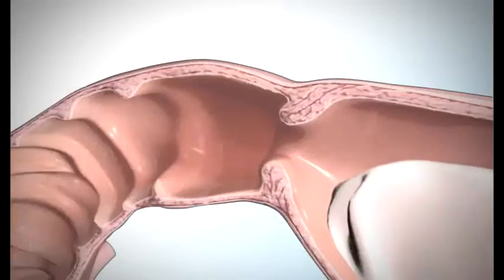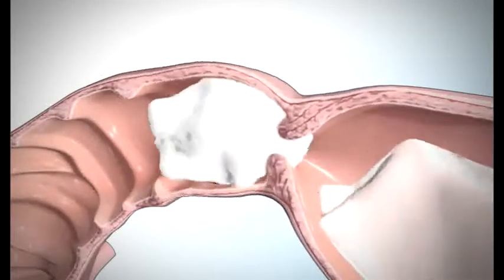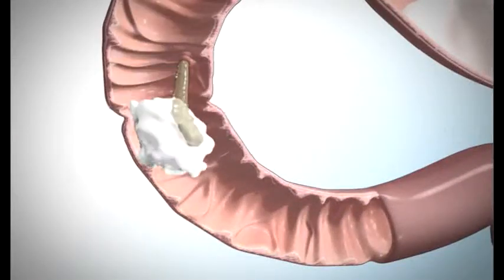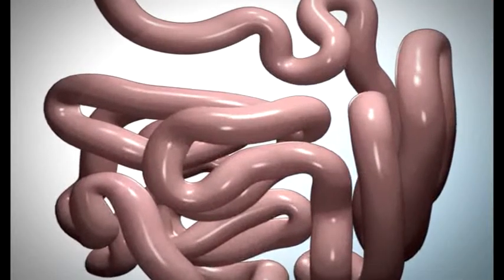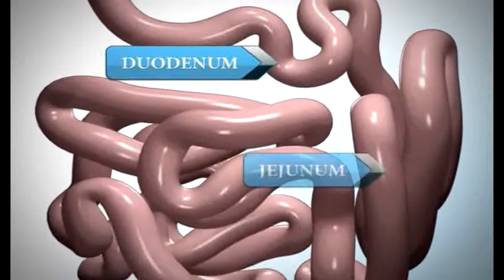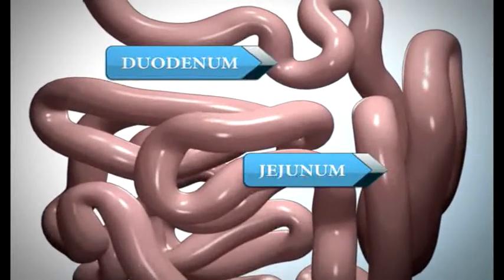Once broken down, the small particles are slowly released into the first part of your small intestine, the duodenum, by a muscle called the pyloric valve. The pyloric valve is a ring of muscle between your stomach and your duodenum. Most of the nutrients from the broken down food are absorbed in the duodenum and the jejunum, which is the second part of the small intestine.